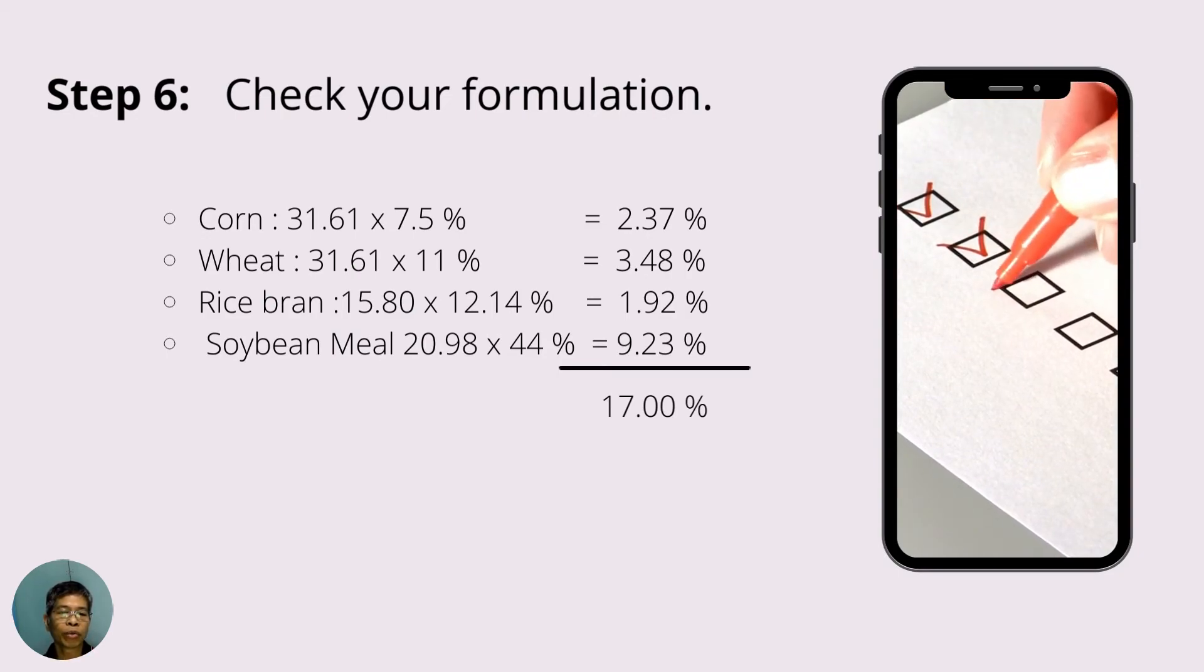For example, 31.61% of corn, multiply it with 7.5%, that's the CP content of corn, you'll get 2.37%. Do the same for wheat, rice bran, and soybean meal according to their amounts and their respective CP content.